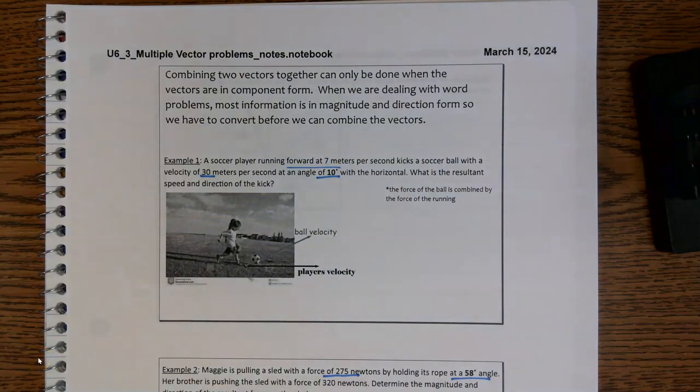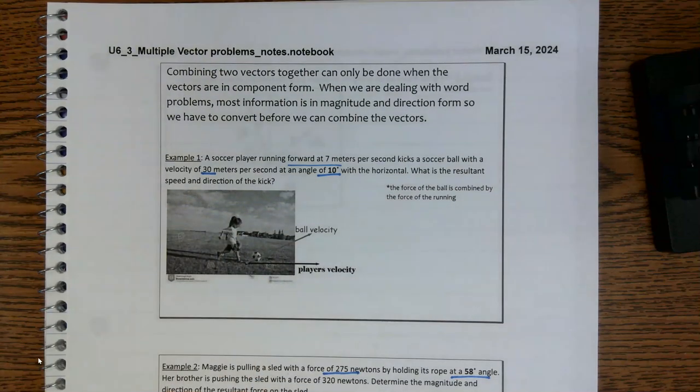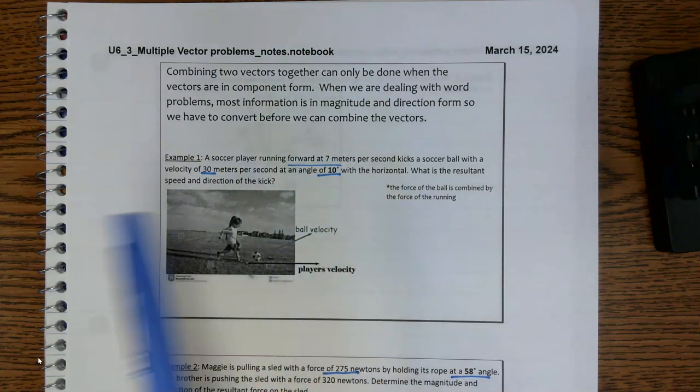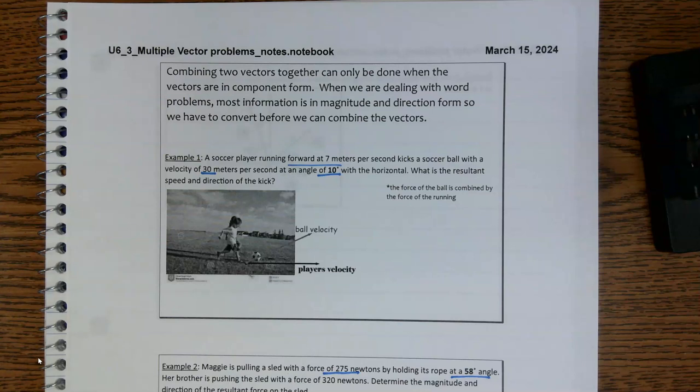Hey guys, so what we're going to do here is we're going to deal with word problems that have multiple vectors acting upon something. So our first one is going to be a cute little soccer player. A soccer player is running forward at 7 meters per second, kicks the ball with a velocity of 30 meters per second at 10 degrees.